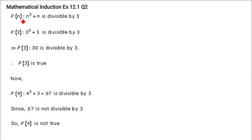Next, if P(n) is n cubed plus n which is divisible by 3, we have to prove that P(3) is true. So just put 3 here. 3 cubed is 27, 27 plus 3 is 30. 30 is divisible by 3, so it is true.